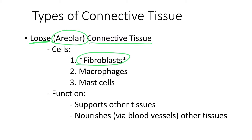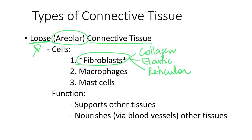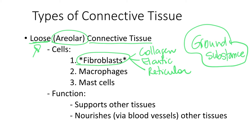Also in the case of the loose connective tissue, fibroblasts produce collagen fibers, elastic fibers, and reticular fibers. The loose connective tissue is called loose because in between the cells and also between the fibers, we have lots of ground substance. This ground substance occupies lots of space, making the fibers and the cells loose further apart.